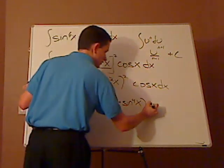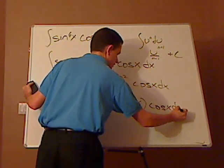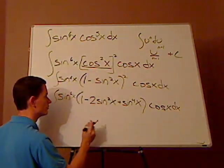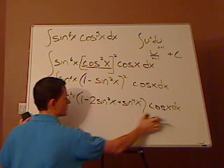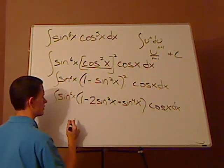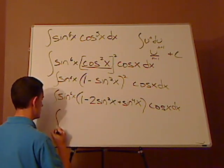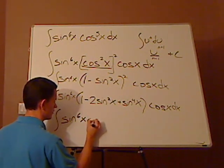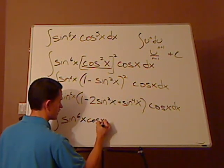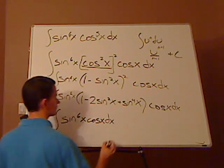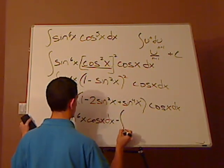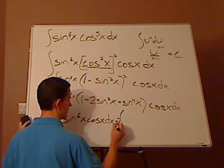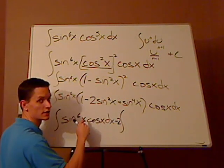Sine to the 6th on the front, cosine x dx on the back. Alright, what you're going to do now is simply distribute this to each of those terms.